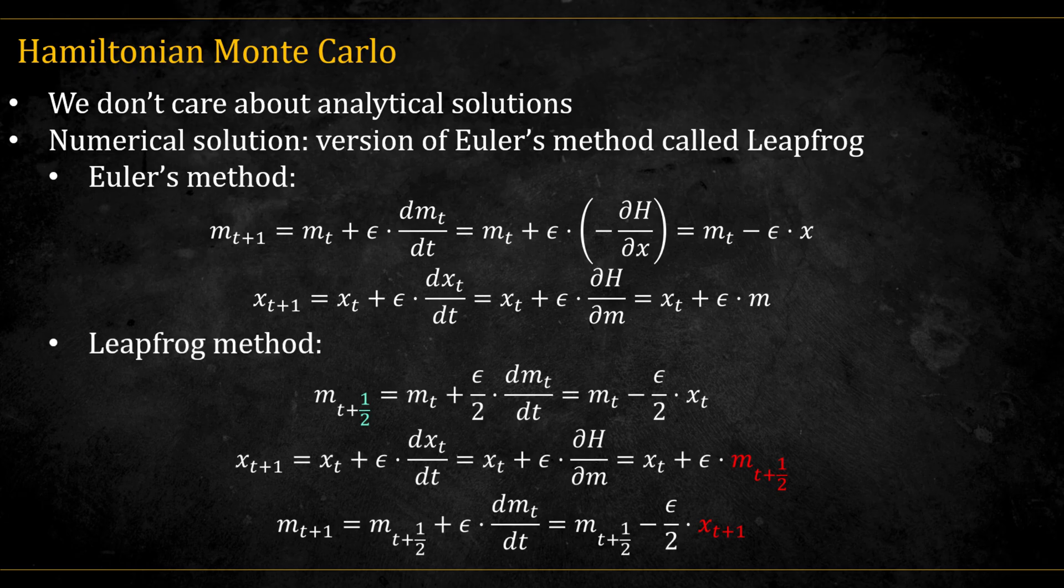A more accurate alternative is the leapfrog method. Here we take a half step in one variable, then update the other variable using that half step. And finally, complete the step with another half step of the first variable. When leapfrog steps are chained together, only the very first and last momentum updates remain half steps. All the intermediate ones combine into full steps, because each new half step stacks with the previous one.